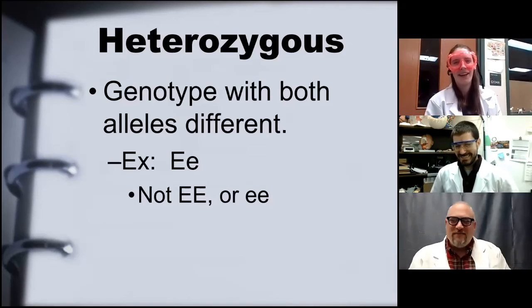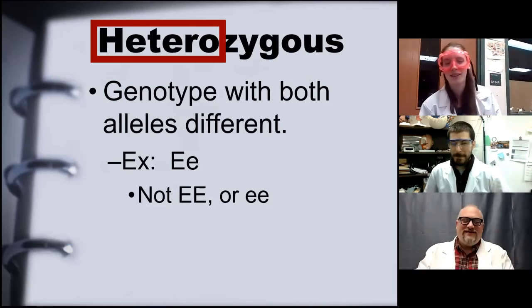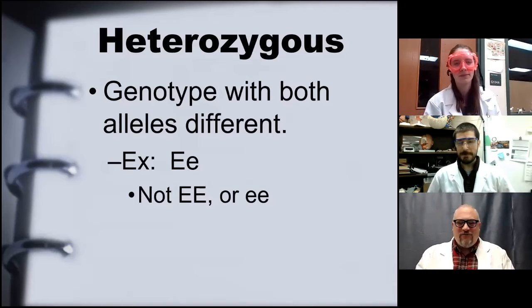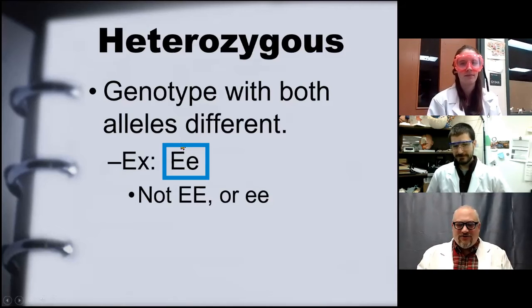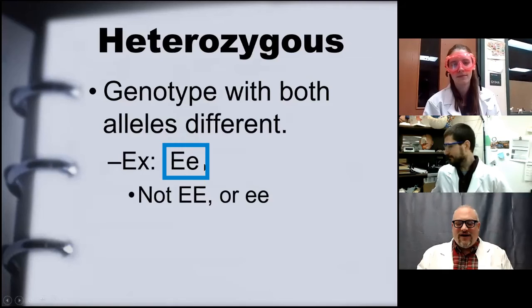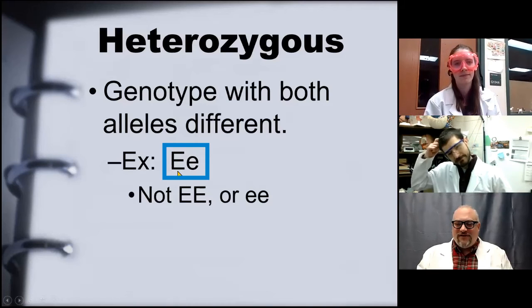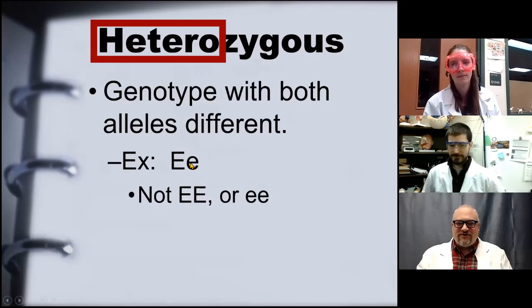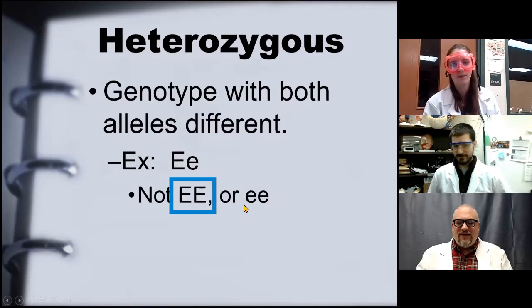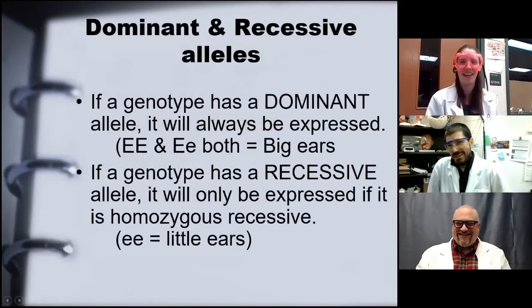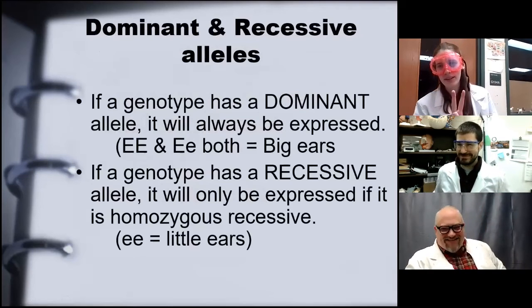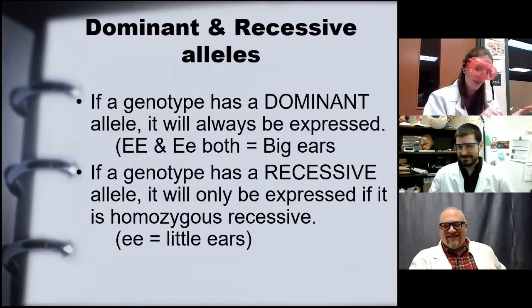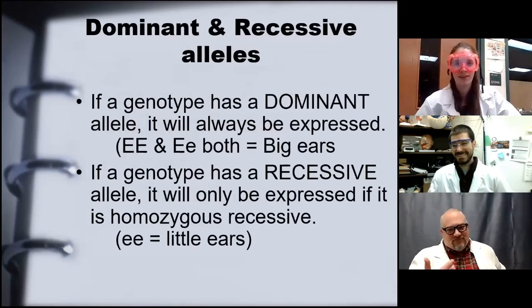Heterozygous — 'hetero' meaning different — describes a genotype where you have two different alleles for the same gene: for example, a big E and a little e for ear size. They both code for ear size, but one codes for big ears and one codes for little ears. That is a heterozygous genotype, as opposed to EE or ee, which are homozygous.